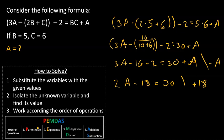Moving 18 to the right, 2A equals 30 plus 18 equals 48.